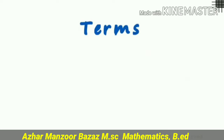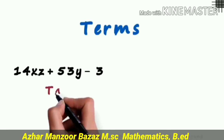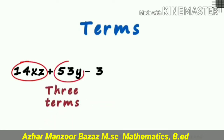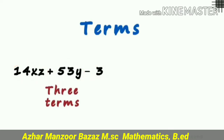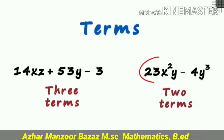For example, if I write 14xz plus 53y minus 3, remember it contains three terms. An expression may contain one term, two terms, or three terms. I will give you another example of an expression which contains two terms: 23x²y minus 4y³ — clearly it contains two terms.